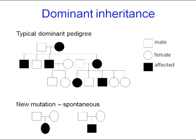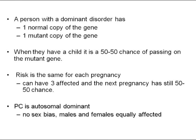In terms of how the disorders are inherited: with a dominant disorder, each person has one normal copy of the gene and one mutant copy of the gene. So every time you have a child, there's a 50-50 chance of passing on the mutant gene, and the risk is the same for each pregnancy. For example, you could have three affected children, and then the risk for the next child is still 50-50 — so you could have a fourth affected child, or it may be an unaffected child. The risk for each pregnancy is 50-50.